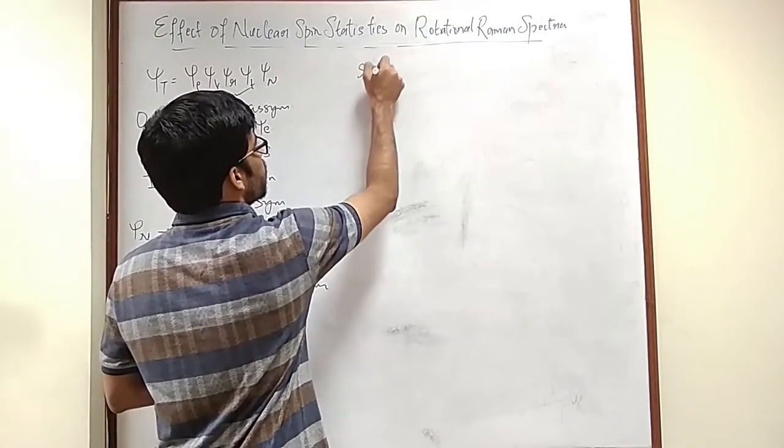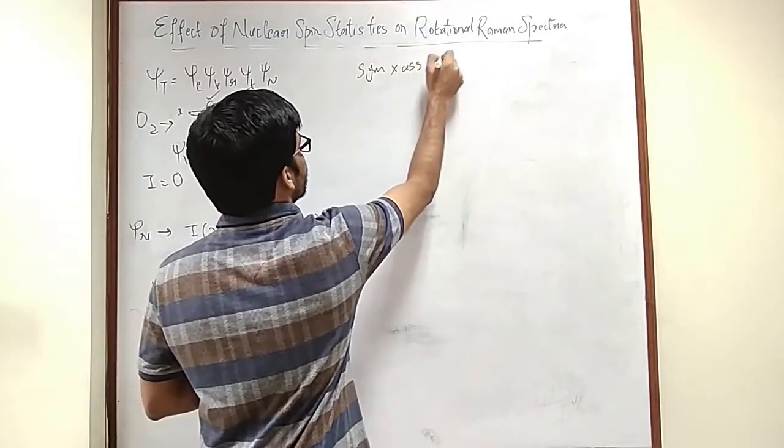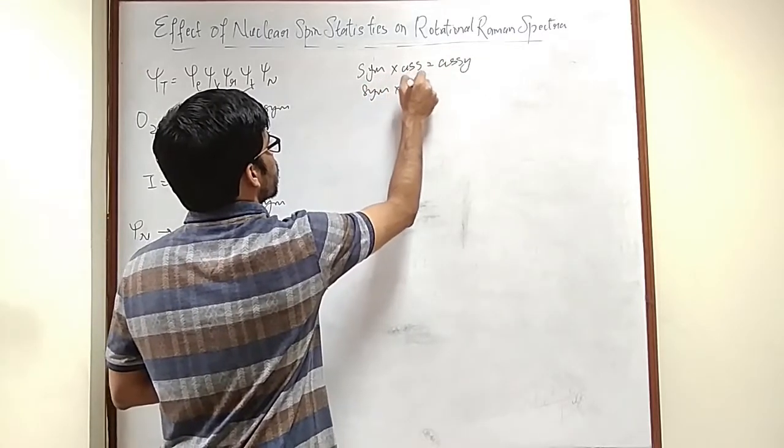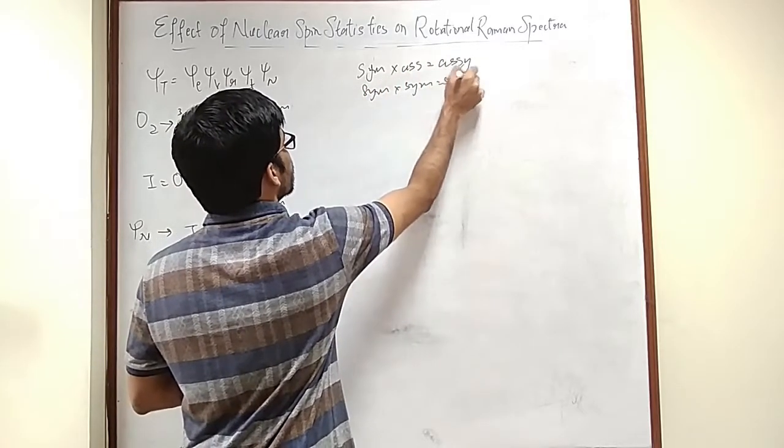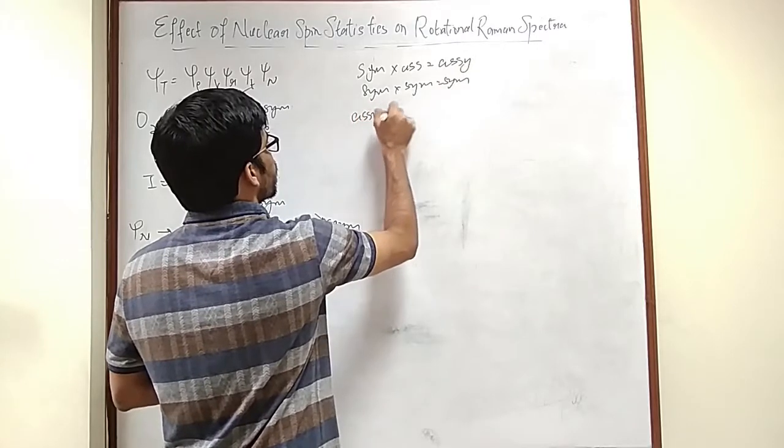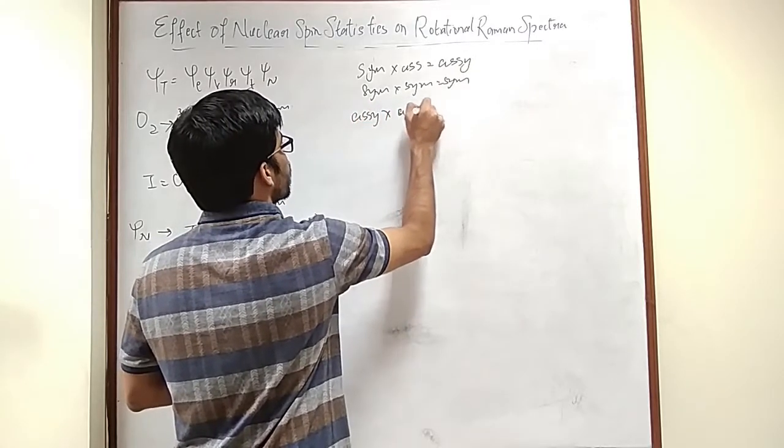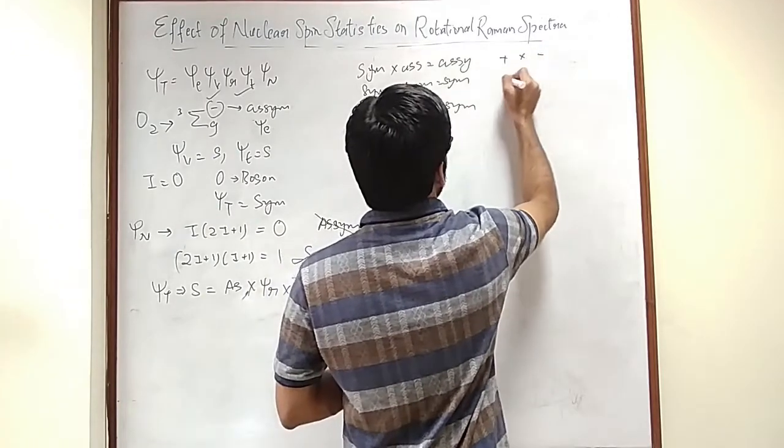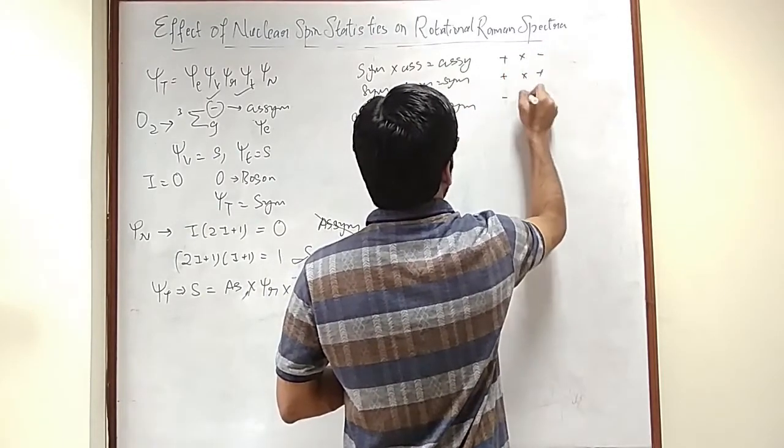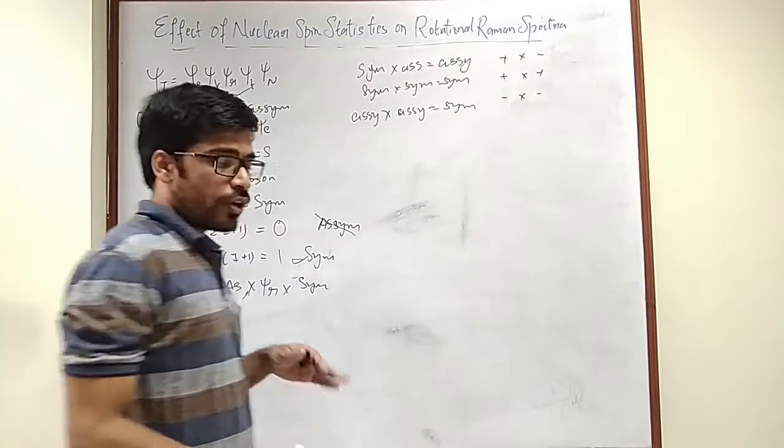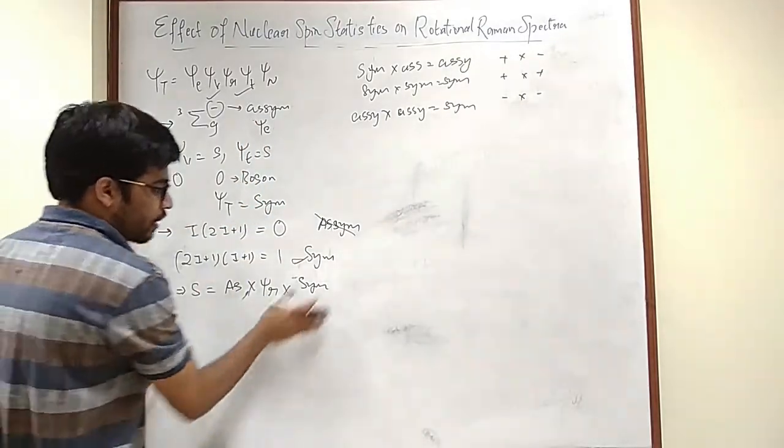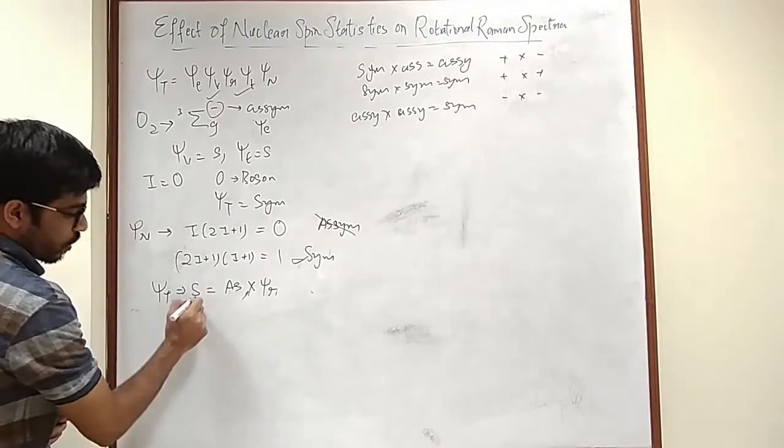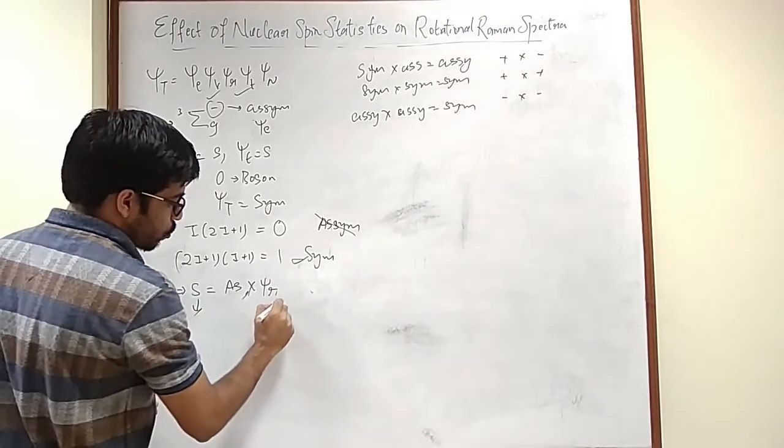Why I am saying so? Symmetric into asymmetric is asymmetric. Symmetric into symmetric remains symmetric. And asymmetric multiplied by asymmetric is also symmetric. It's kind of plus into minus, plus into plus, minus into minus. So if you are using that trend, this is not going to make any effect. All I am having is this. So for this to be symmetric, this has to be asymmetric.